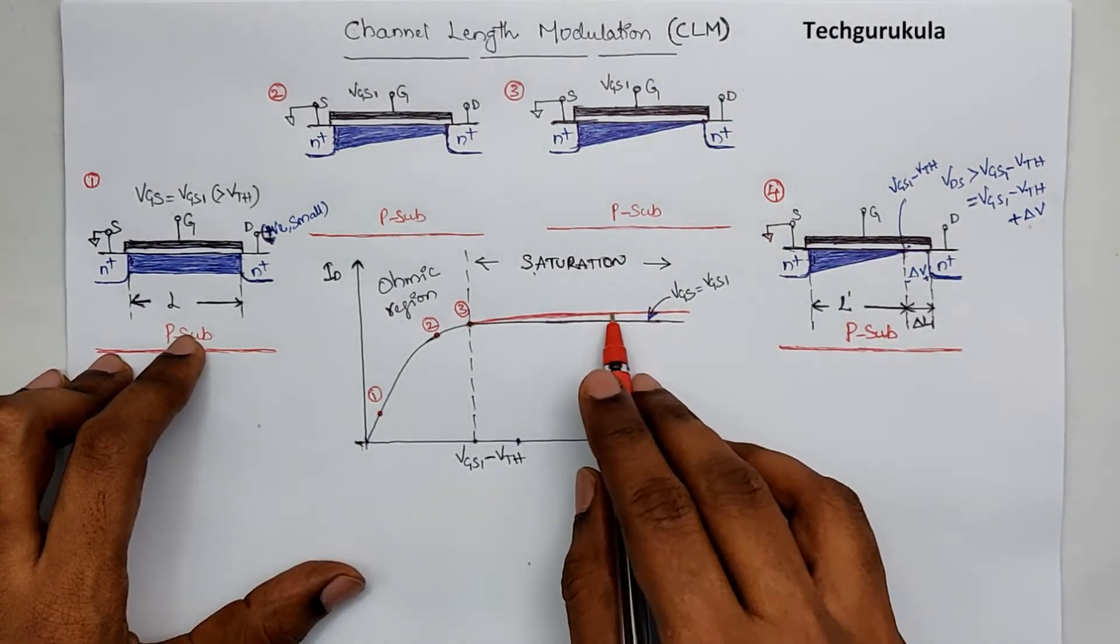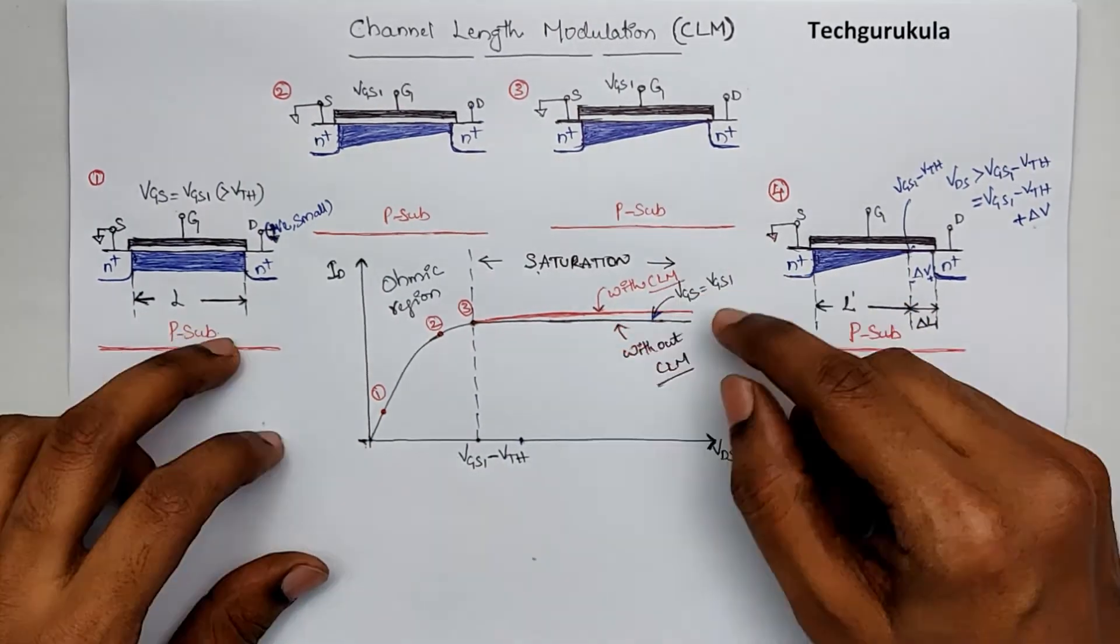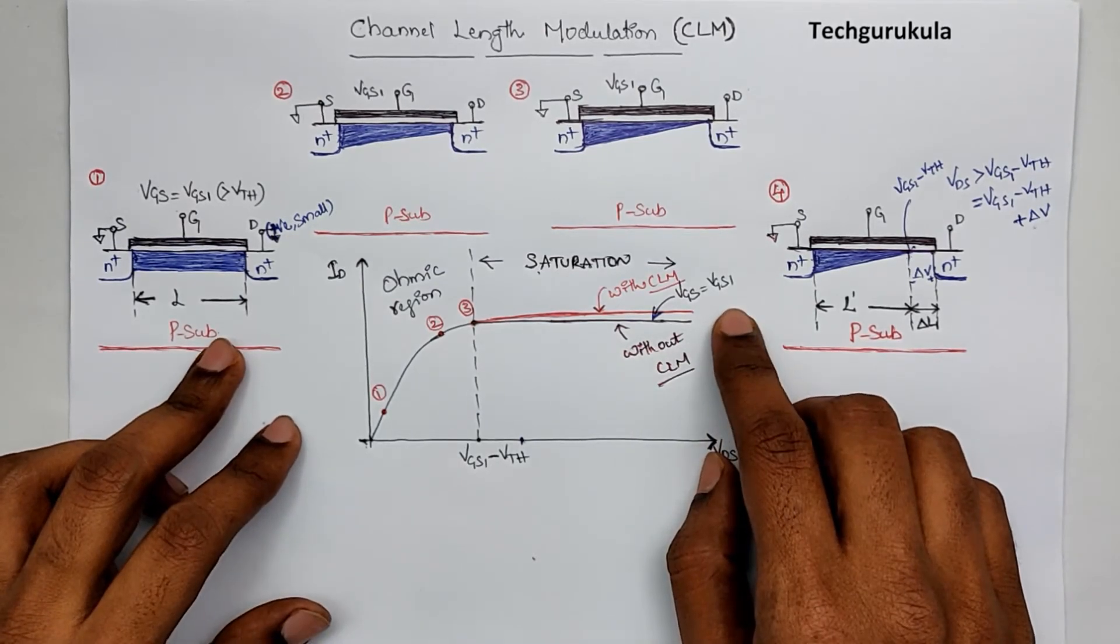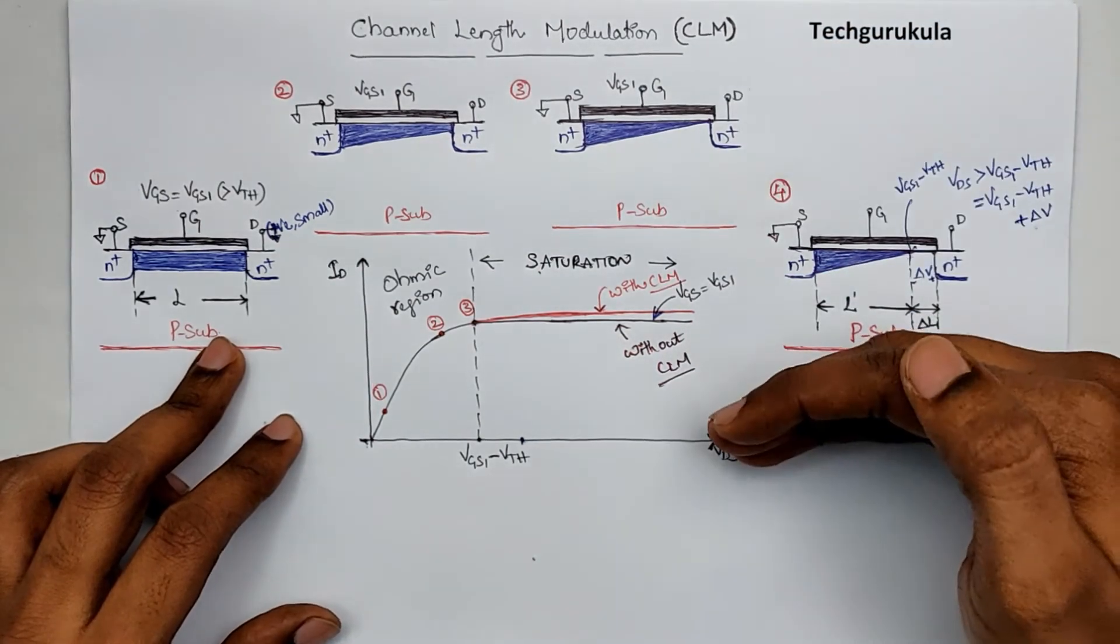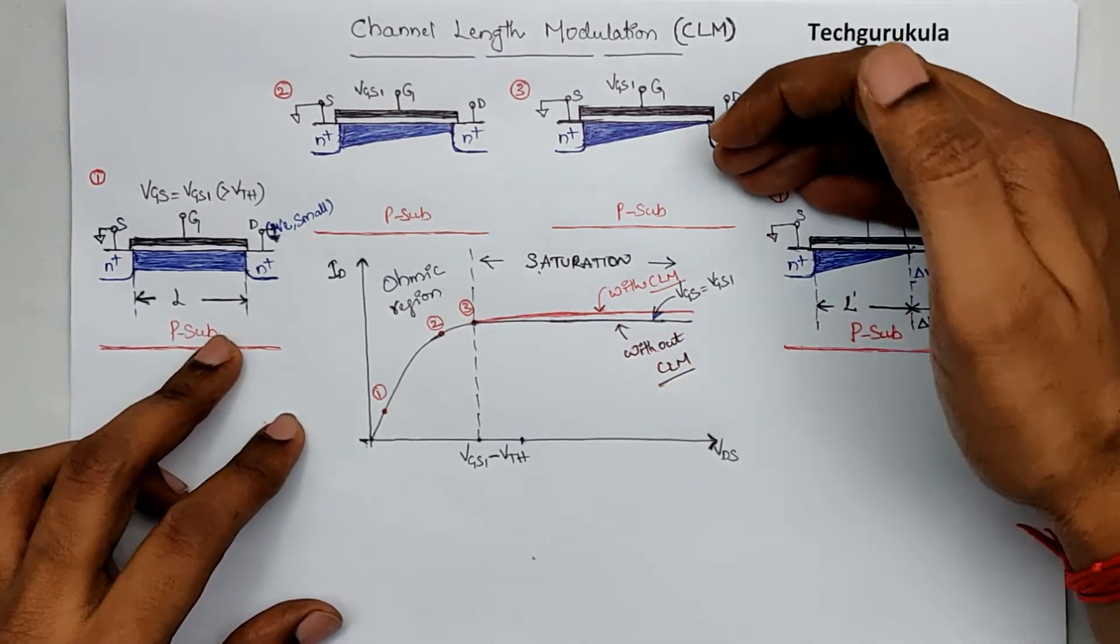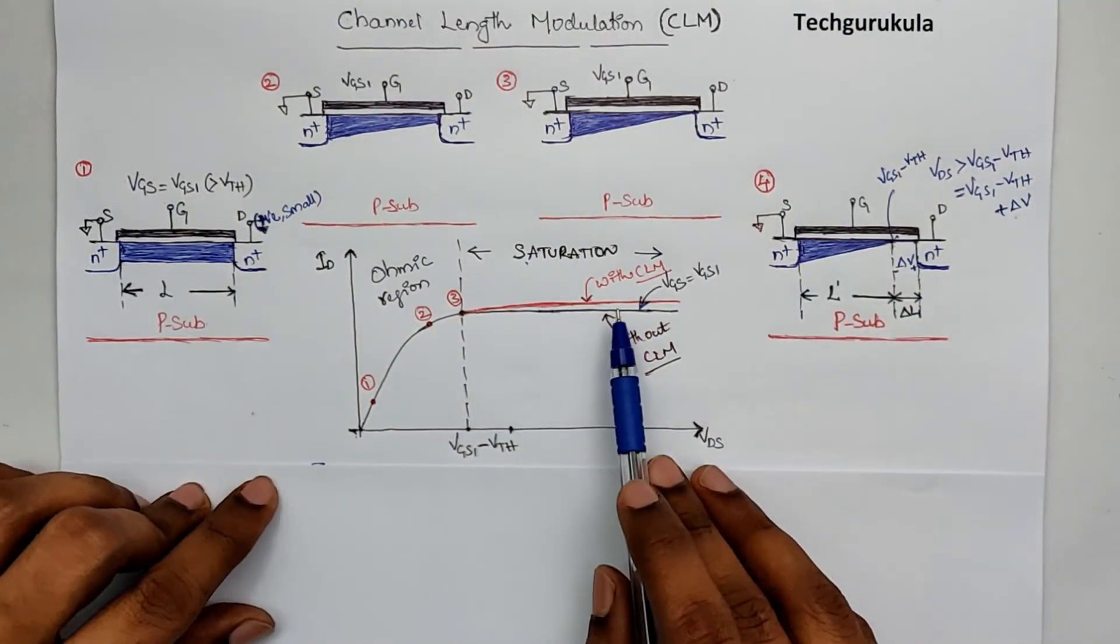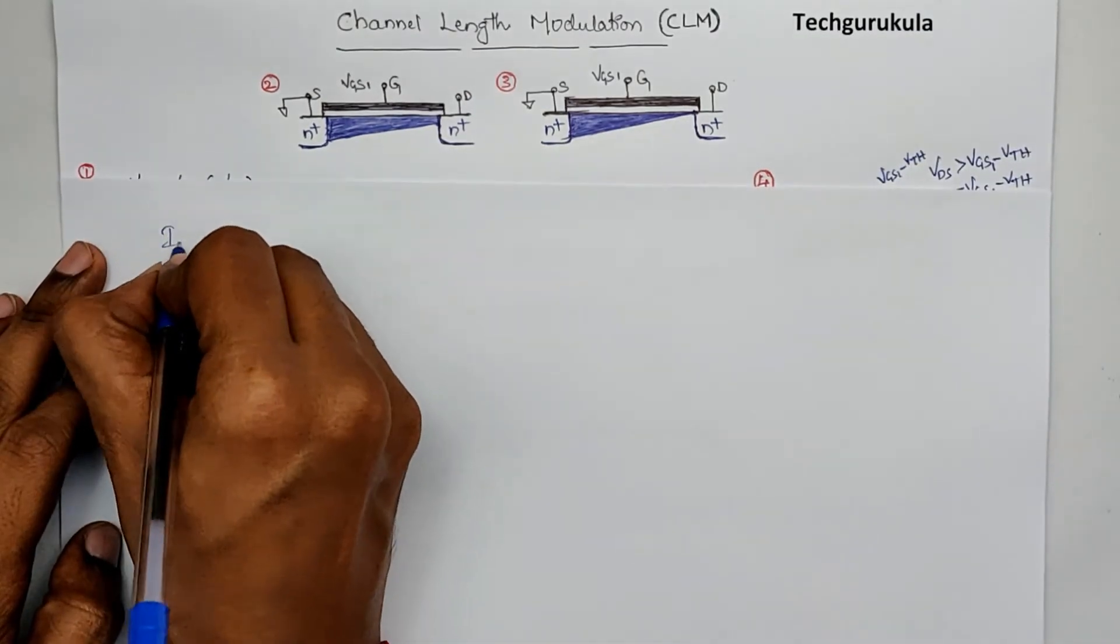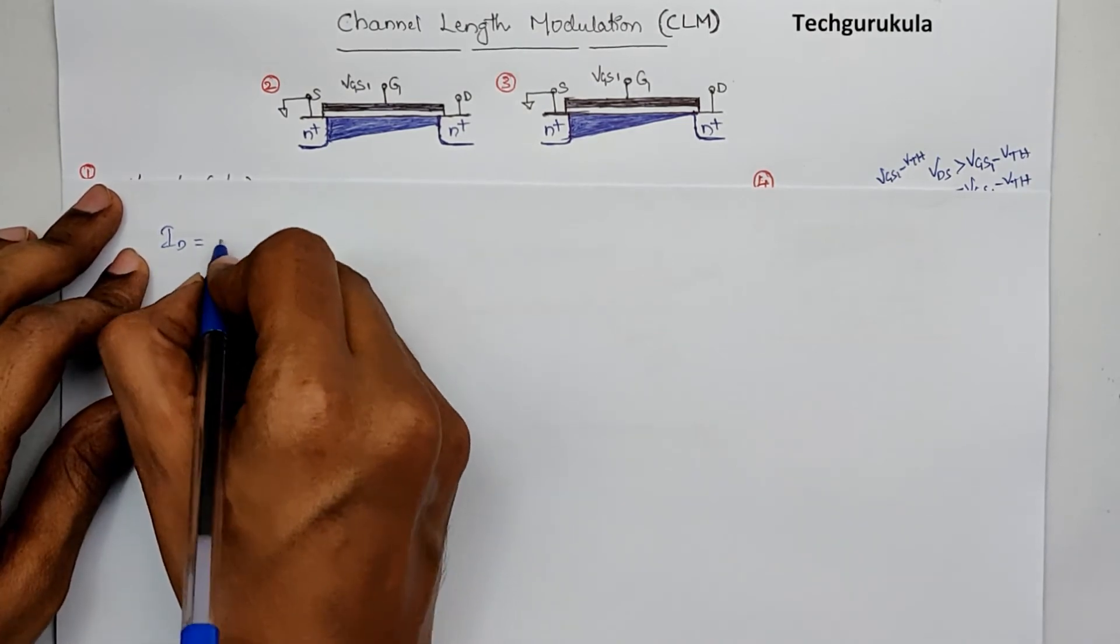So let me say this is with CLM and this is without CLM. In fact this point reminds me of the Tom Cruise movie which is Night and Day, in which he says with me, without me. In this case we can say this is with CLM the current is higher, without CLM the current is less. With CLM, without CLM. Now let's find out how would the current equation be with channel length modulation. To find that out, first I am taking the current equation in saturation region without CLM.